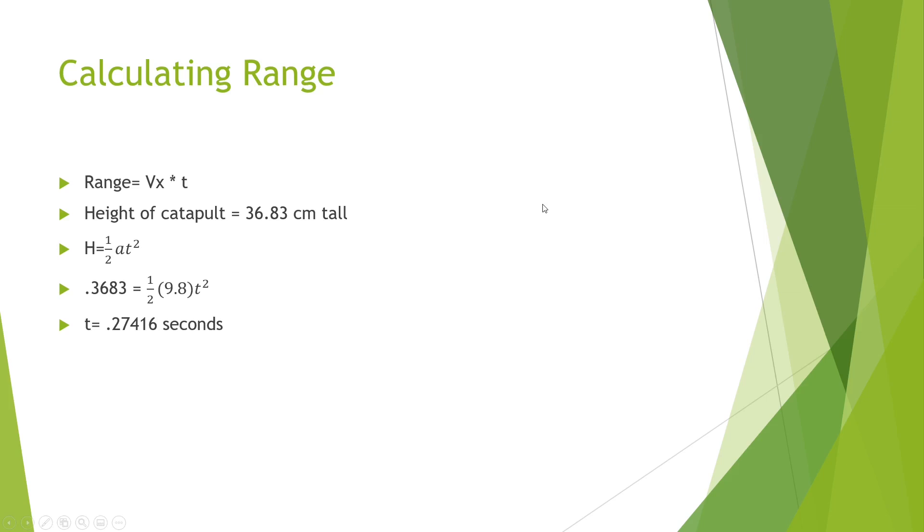Next we needed to calculate the range and to do that we needed the velocity multiplied by the time. To find the time we needed to find the height of the catapult at which the ball was launched, which came out to be 36.83 centimeters. The height was then set equal to 1/2 g t squared and we found the time to be 0.27416 seconds.